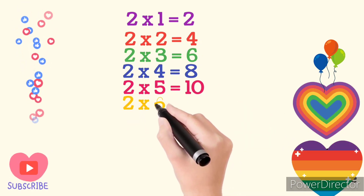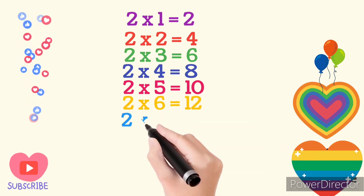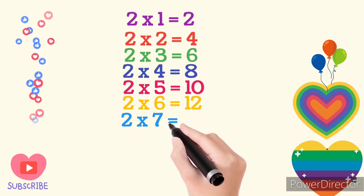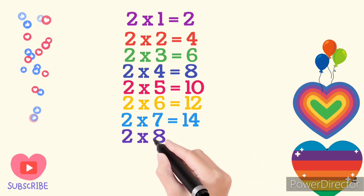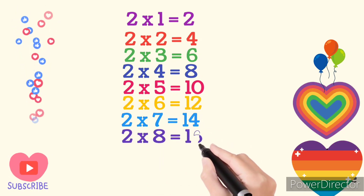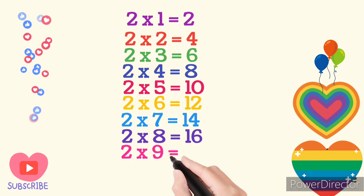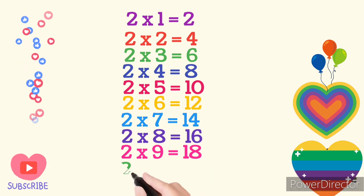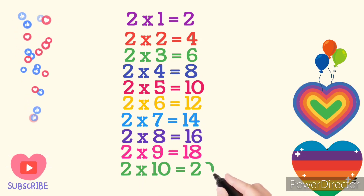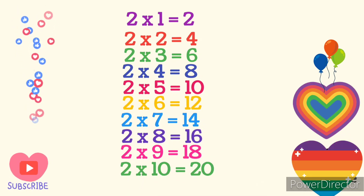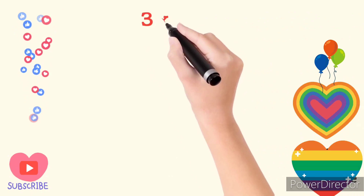2 times 6 are 12. 2 times 7 are 14. 2 times 8 are 16. 2 times 9 are 18. 2 times 10 are 20. Table of 3.